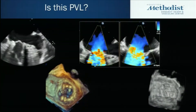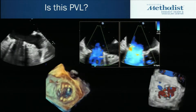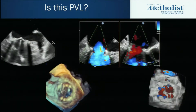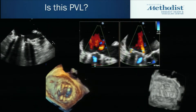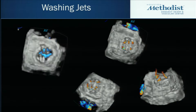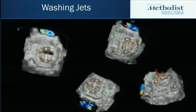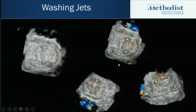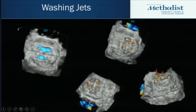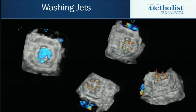We'll start with a case — a patient with a mechanical mitral valve showing systolic flow through that valve. Do you think this is a perivalvular leak or not? It's important to differentiate perivalvular leaks from normal washing jets associated with mechanical valves. The key features of normal washing jets, which are not pathological, are that they're located inside the valve ring, focused around the hinge points, and point inwards. These are normal and not pathological.